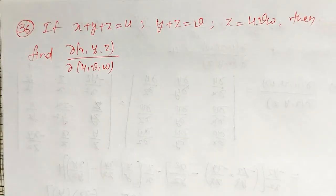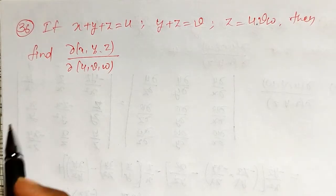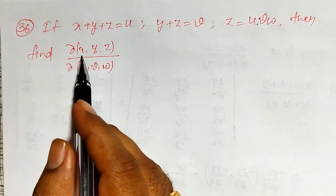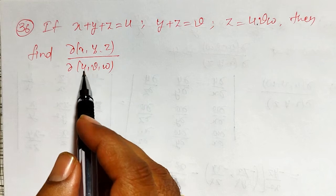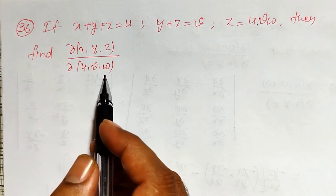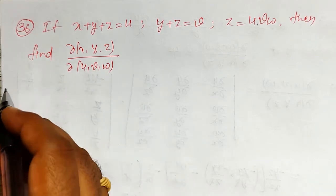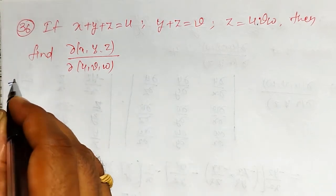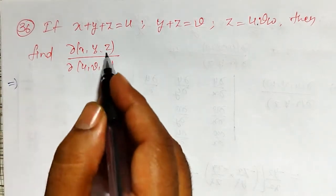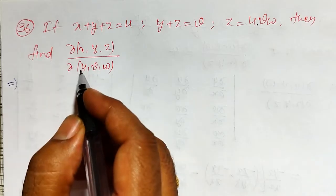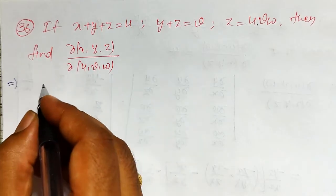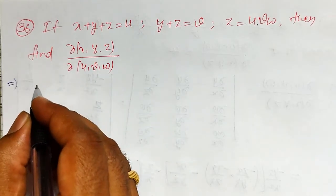Welcome friends. In this video I am going to solve a Jacobian example of x, y, z with respect to u, v, w. This problem is a little bit different. First let me define the Jacobian, then I will come back to how to evaluate this one.